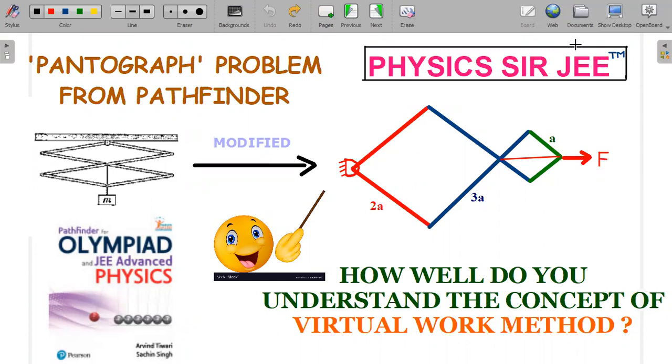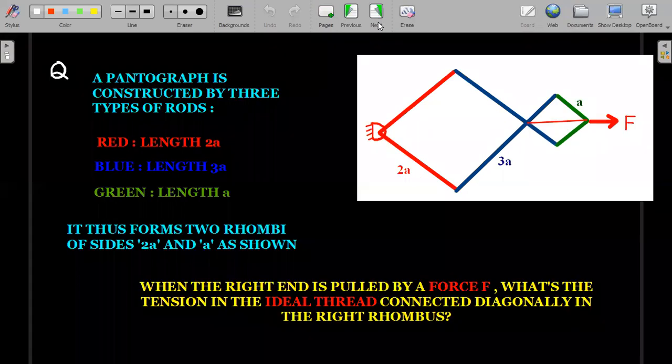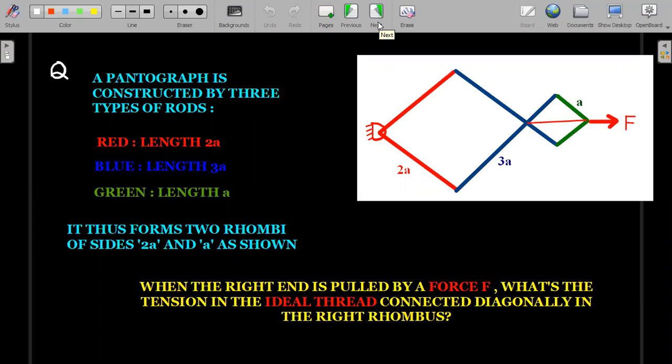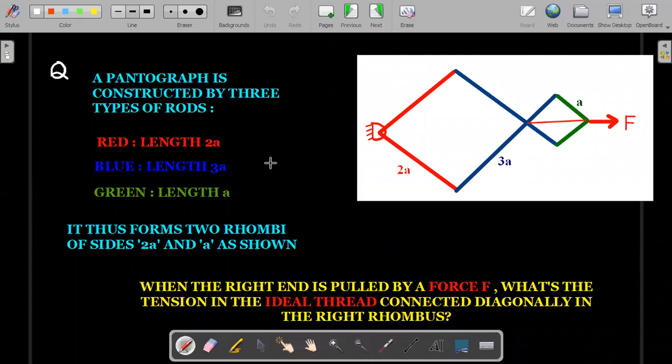So let me present to you the formal question. This is the modified version of that particular question to understand the concept better. A pantograph is constructed by three types of rods. One is the red one, which is of length 2a.